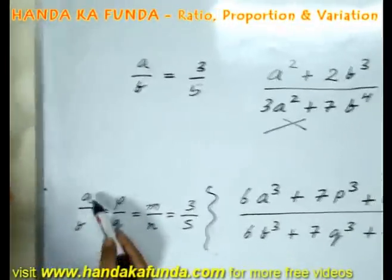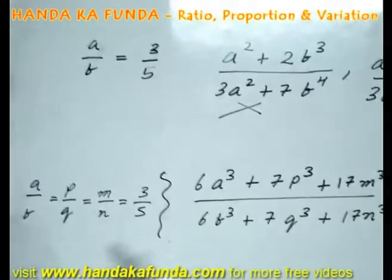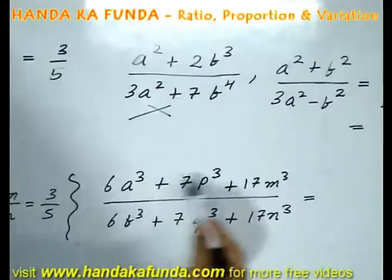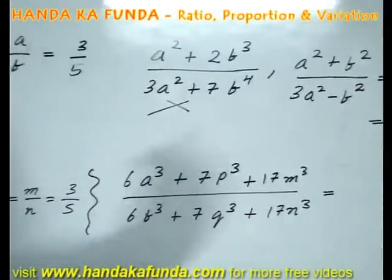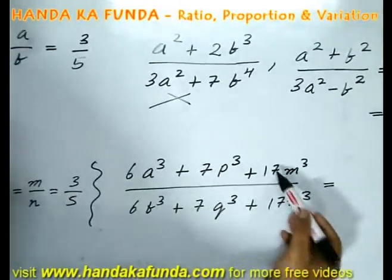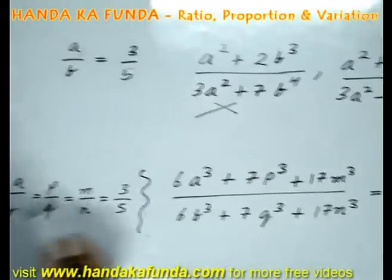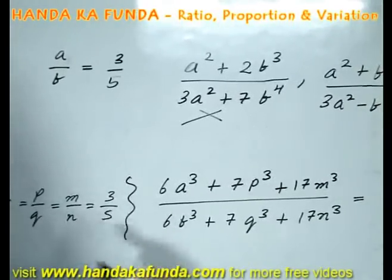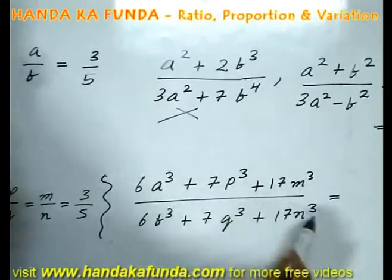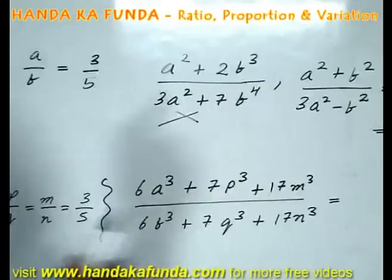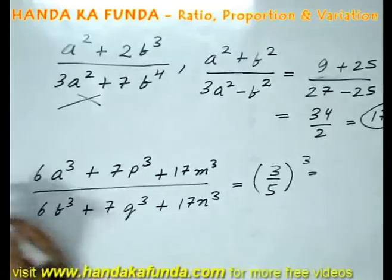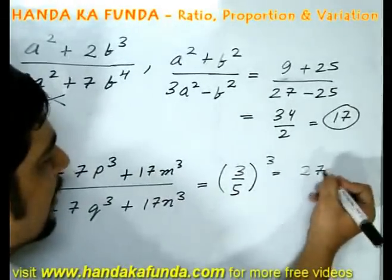Another special case would be something like this. Suppose I am given A by B is P by Q is M by N is 3 by 5, and then I am given a long complicated equation. Please note that in the complicated equation, degrees of all of them are same. They are all 3, 3, 3, 3, 3, 3. Another point to note is that the coefficient of the corresponding terms is the same. That is, for A cube and B cube it is 6, for P cube and Q cube it is 7, for M cube and N cube it is 17. Now to find out the actual value of this, you may substitute A as 3B by 5, P as 3Q by 5, M as 3N by 5 and then calculate. But you must realize it is going to be a hell of a job. To avoid that, if such a pattern exists, the pattern is that all degrees are same and coefficients of the corresponding terms are same, then directly you can say that your answer will be whatever was the original ratio to whatever is the common degree, which in this case is 3. Or you can directly say, for such a complicated question, directly your answer is 27 by 125.